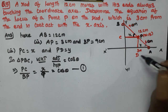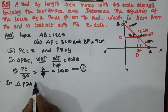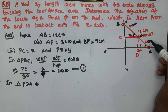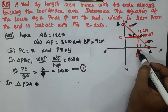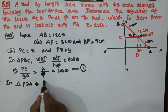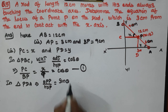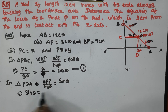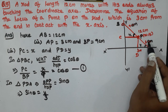In triangle PAD, using sin θ — opposite by hypotenuse — sin θ equals opposite value y divided by 3. So sin θ equals y by 3 — that is equation number 2.